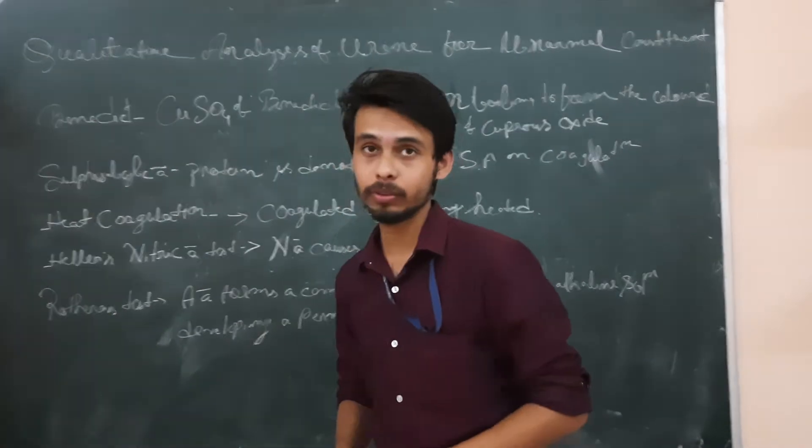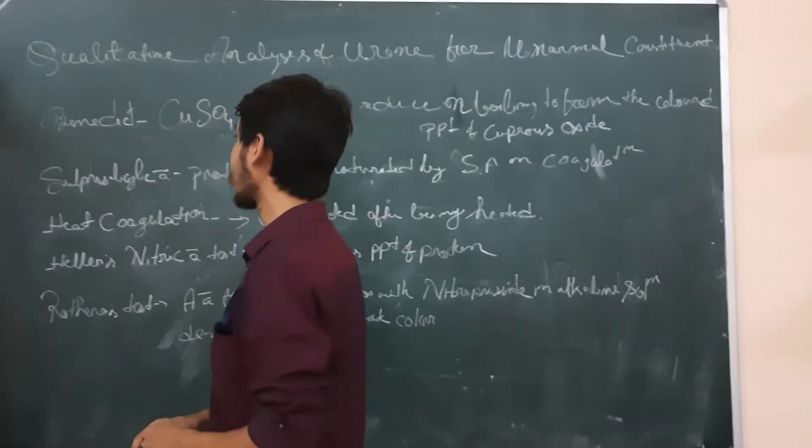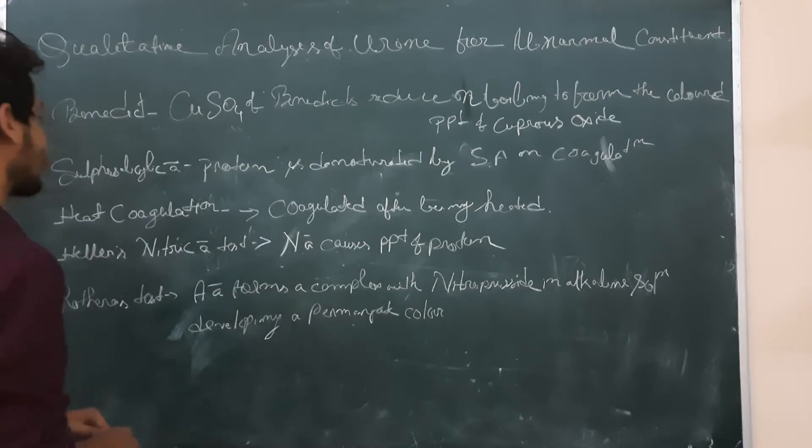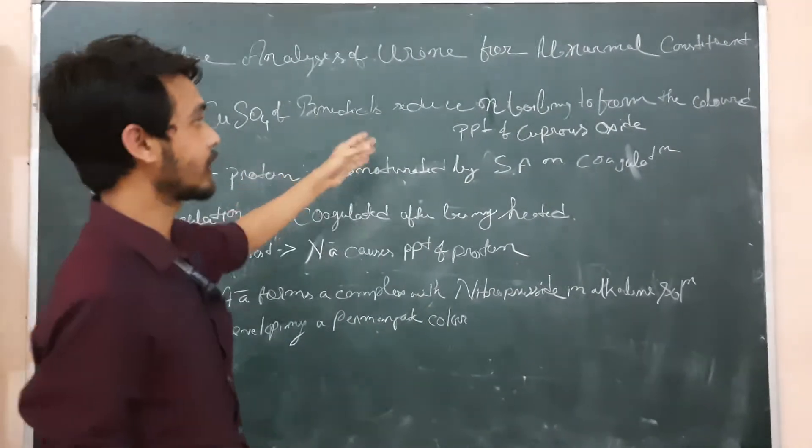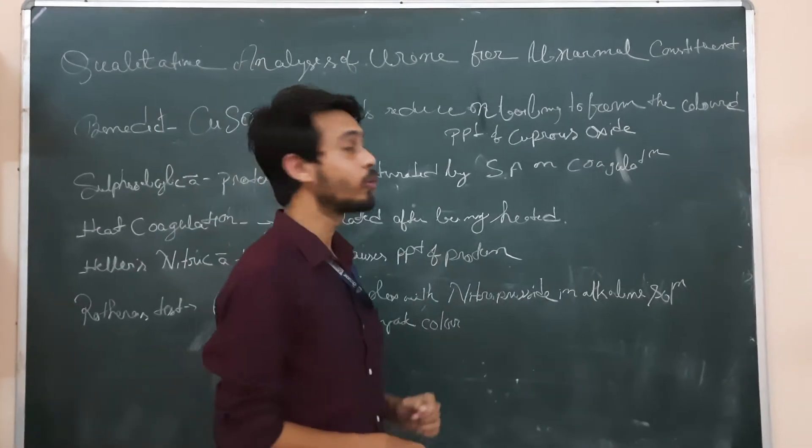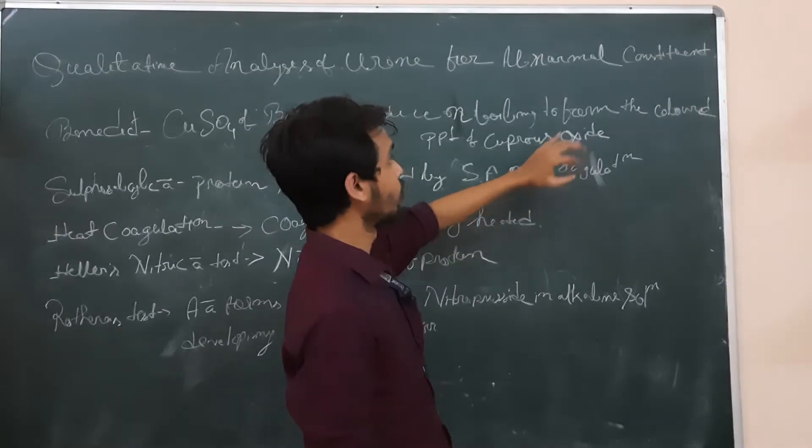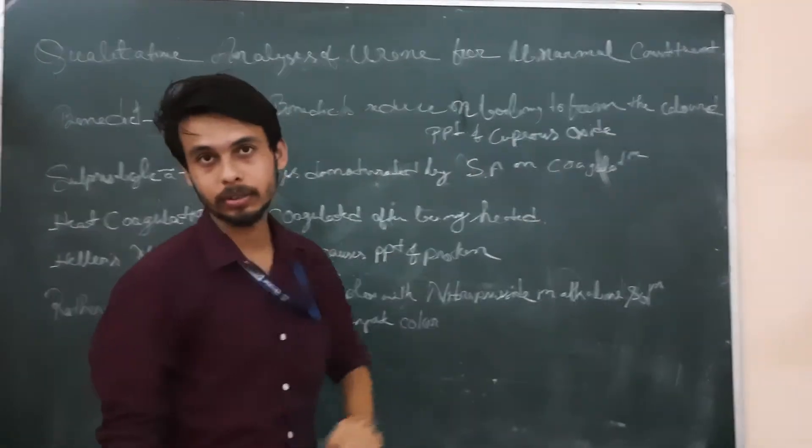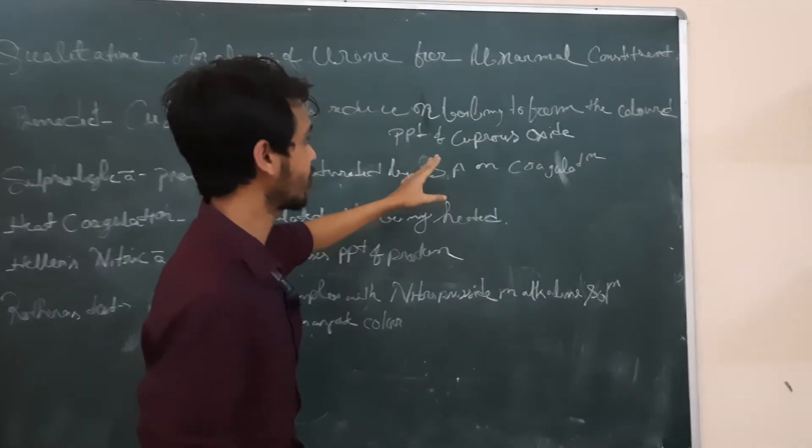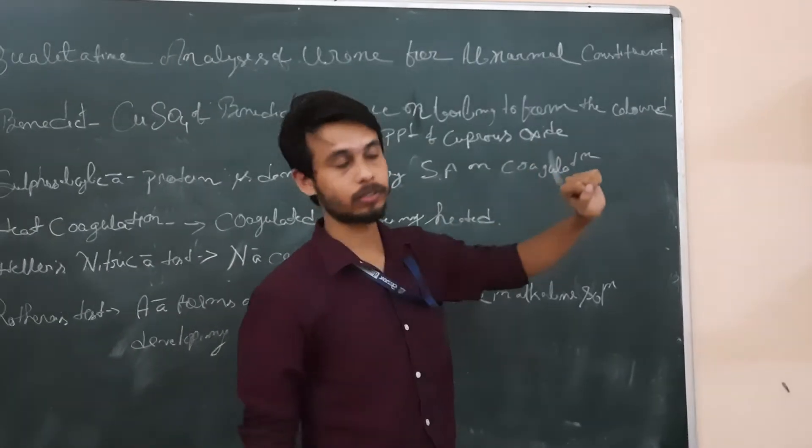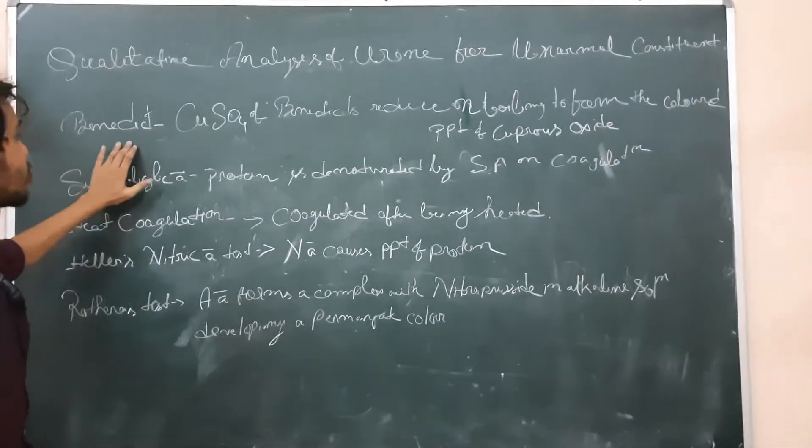We are performing this Benedict test for the determination of glucose. So the principle involved in this Benedict test is copper sulfate of Benedict reagent is reduced by the reducing sugar on boiling to form a colored precipitate, which is precipitation of cuprous oxide. So this is the principle involved in the Benedict test for the determination of glucose.